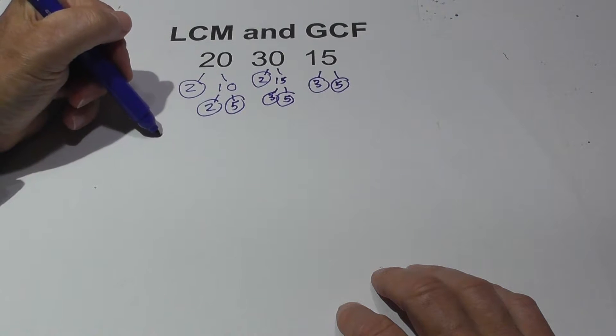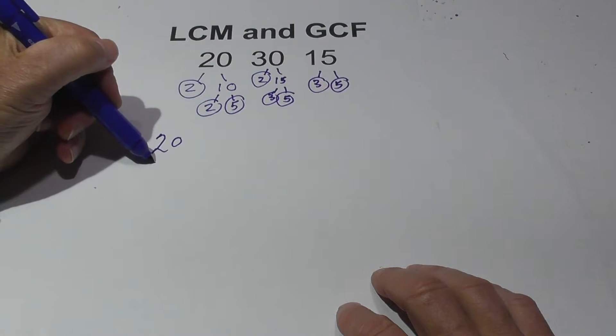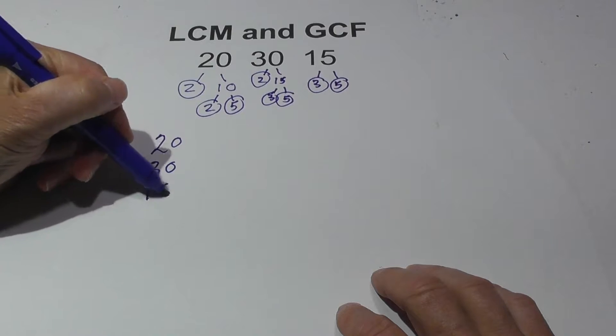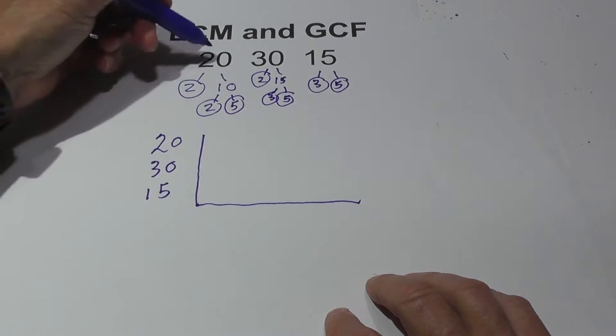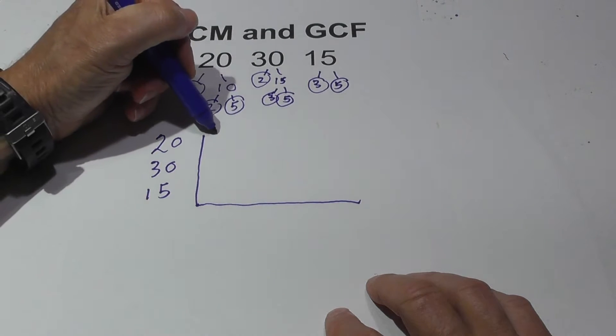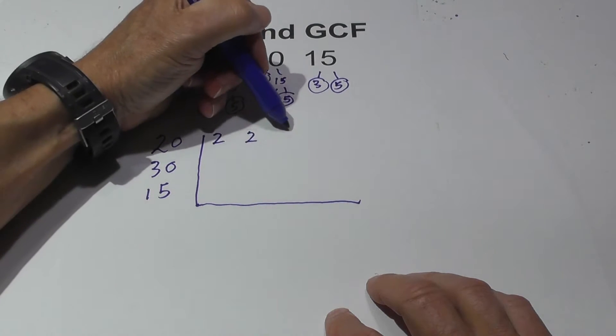Now, I have found that what helps a lot is to go ahead and make a chart, and I'm going to put the prime factors for each number. I'm going to write 2, 2, and 5.